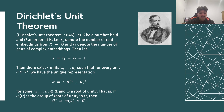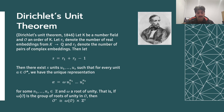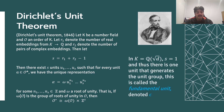Those s units of an order O generate its unit group. For a unit in O, we have a unique representation as a product of a root of unity in O and powers of u_1 through u_s. In a quadratic number field, s equals 1 and thus there is only one unit which generates the entire group.